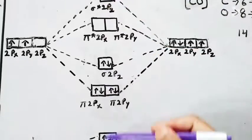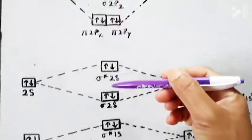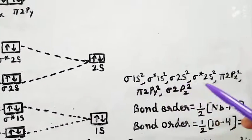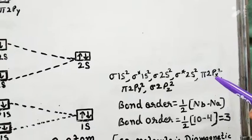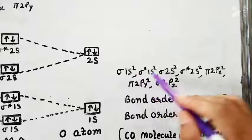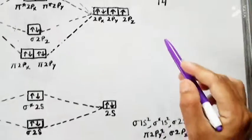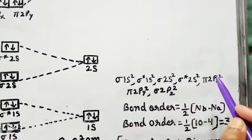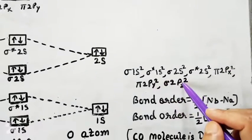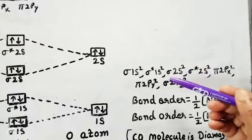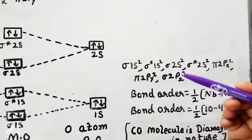This molecular orbital configuration can also be written as a series: σ1s² σ*1s² σ2s² σ*2s² π2px² π2py² σ2pz². We can count the total number of electrons — 2, 4, 6, 8, 10, 12, 14 — confirming 14 total electrons. This series is followed when the number of electrons in the molecule is 14 or less than 14.